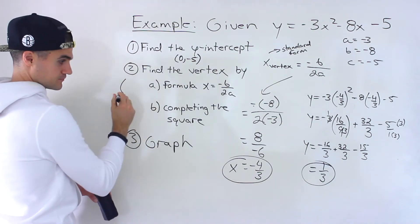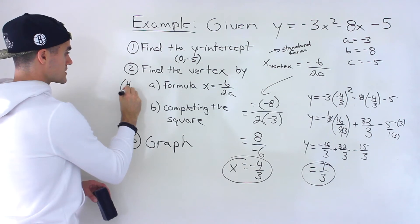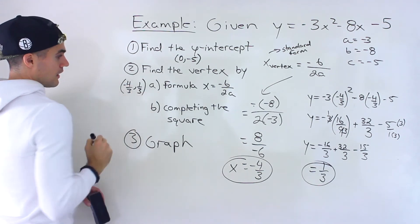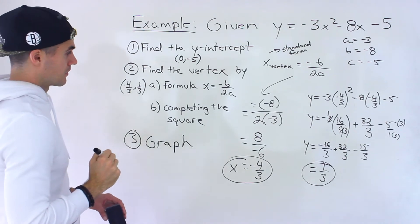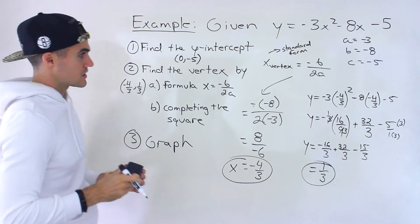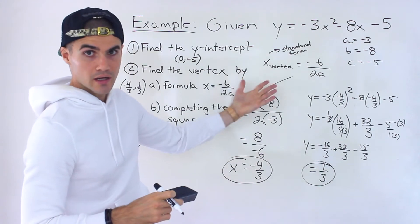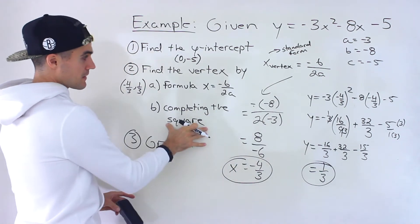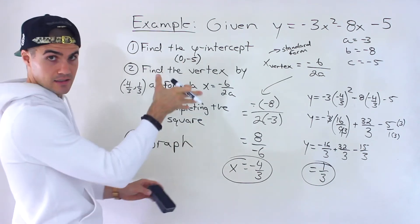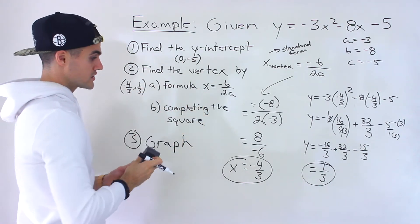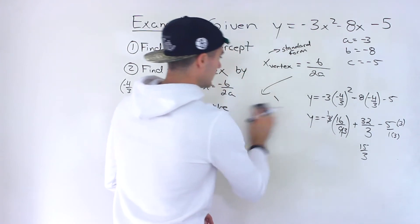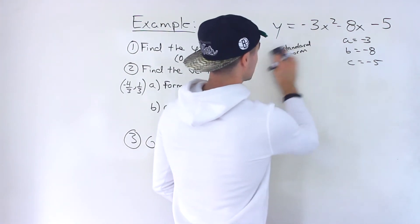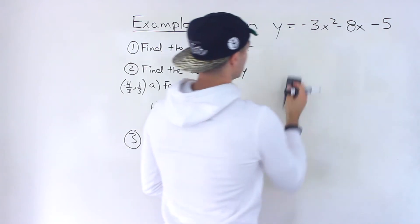So the vertex is (negative 4 over 3, 1 over 3). Using this formula you get the x-value of the vertex, then plug it in to get the corresponding y-value. Now, finding the vertex by completing the square — converting to vertex form — will involve a bit more algebra.